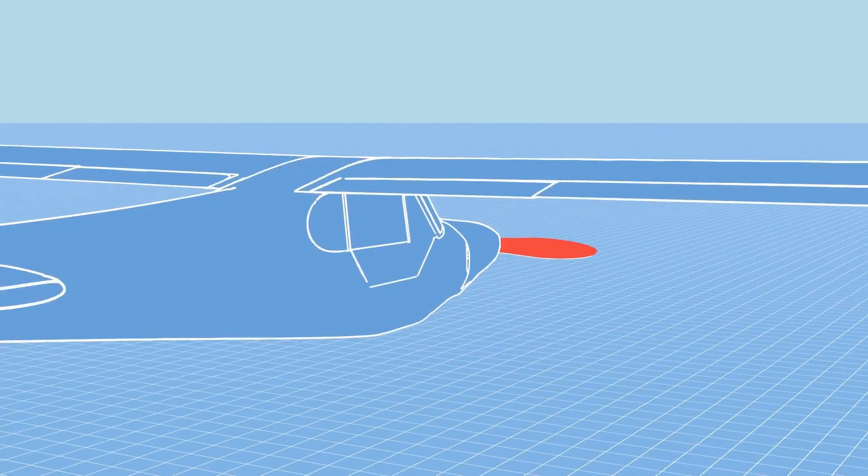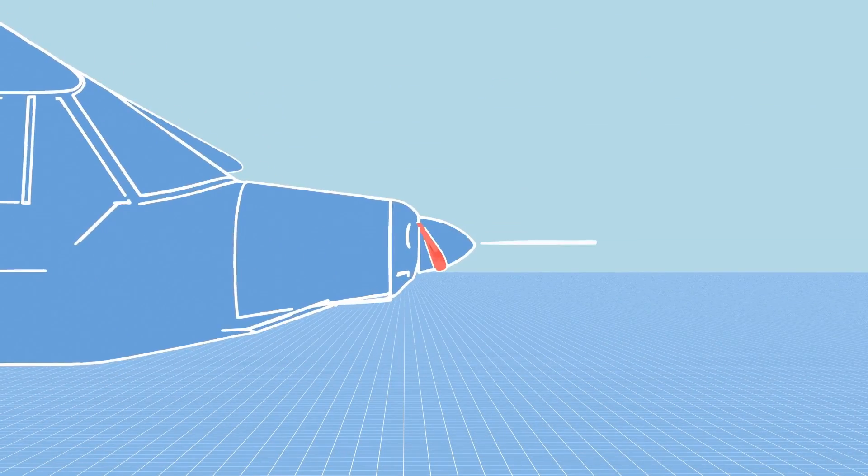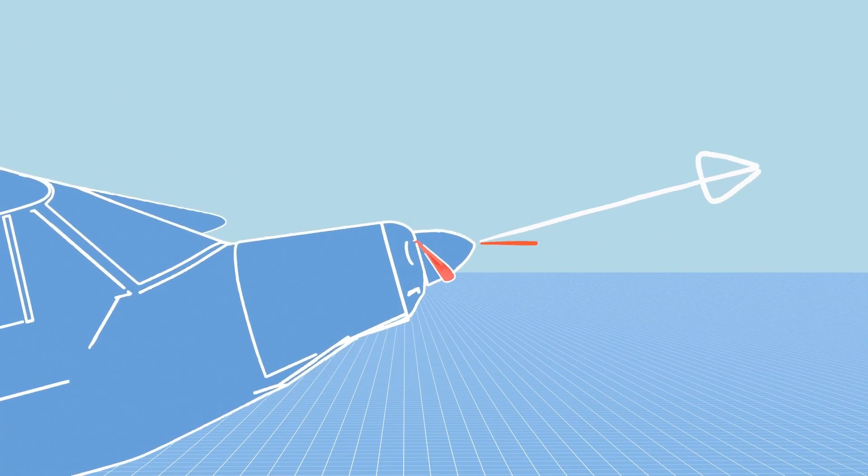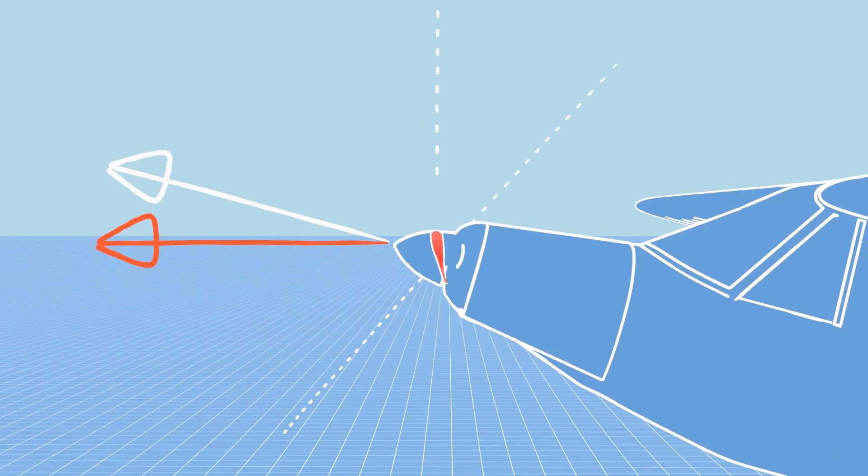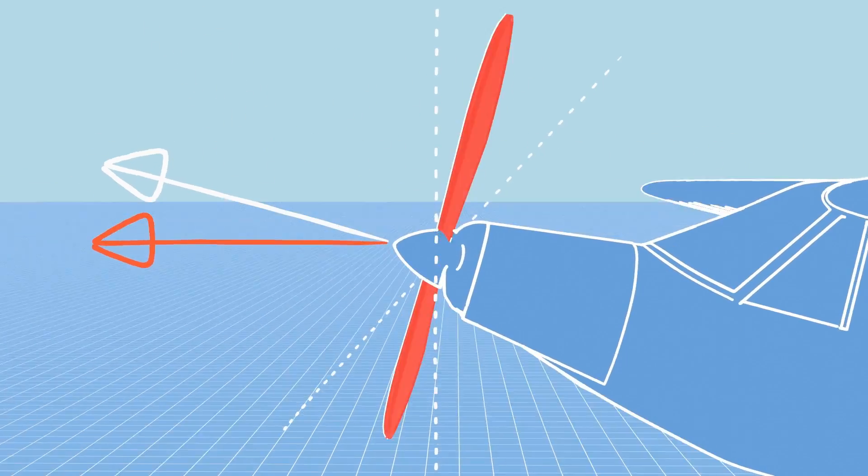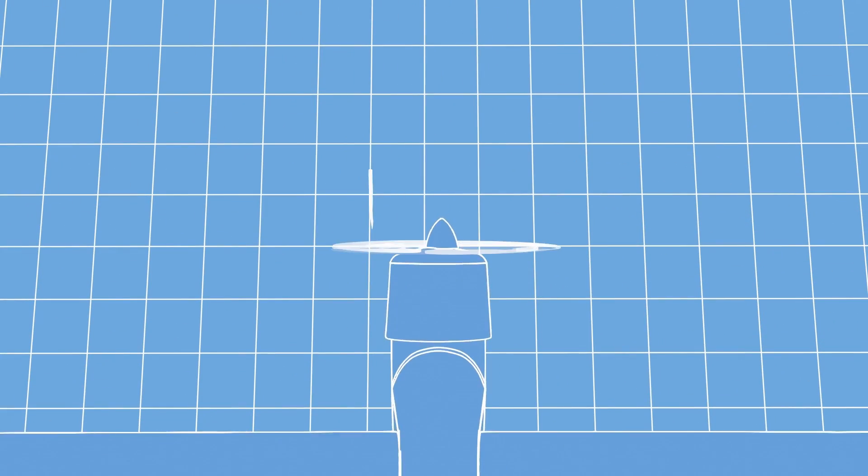Then there is the P-factor or propeller factor. Usually planes are pointing up relative to the direction of travel. This means that one side of the propeller has a steeper angle than the other side. In this case the planes will have more thrust on the right side, pulling the plane to the left.